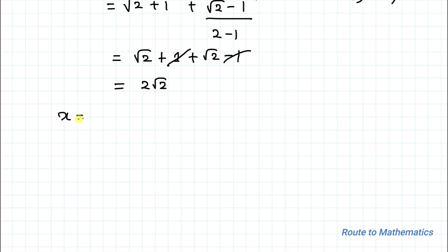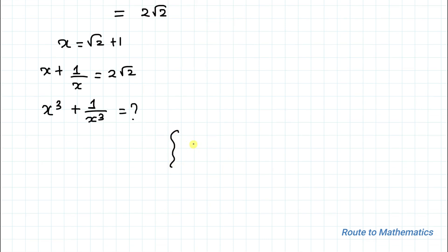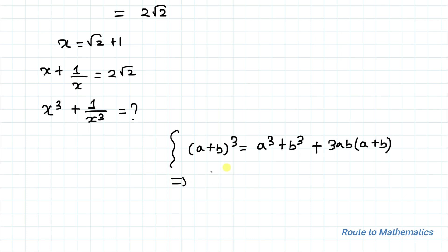So we found x equals root 2 plus 1, and x plus 1 by x equals 2 root 2. We are asked to find x cubed plus 1 by x cubed. We know the algebraic identity: (a + b)³ equals a³ plus b³ plus 3ab(a + b). This implies a³ plus b³ equals (a + b)³ minus 3ab(a + b).